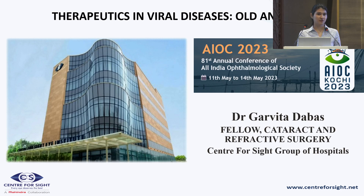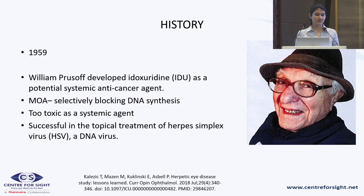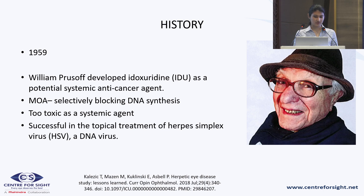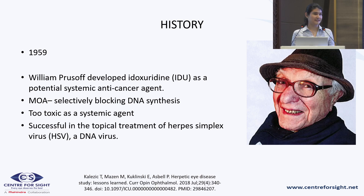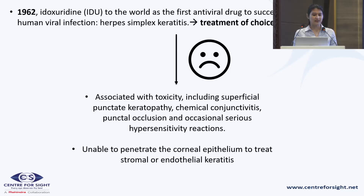Beginning from the history of viral therapeutics, in the year 1959, Dr. William Prussoff developed Idoxuridine as a potential anti-cancer agent. The mechanism of action involved blocking of DNA synthesis. It was too toxic as a systemic agent; however, it proved to be a good topical treatment against the DNA virus, which is the herpes simplex virus. Hence, in the year 1962, it was marketed as the first treatment of choice for herpes simplex keratitis.